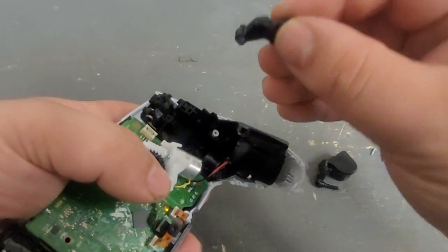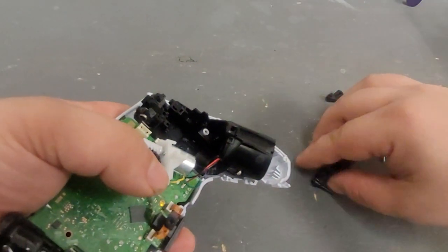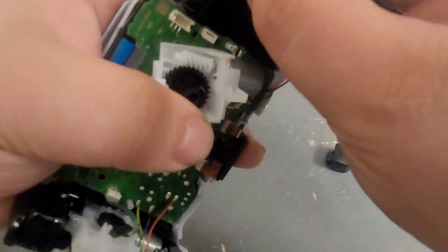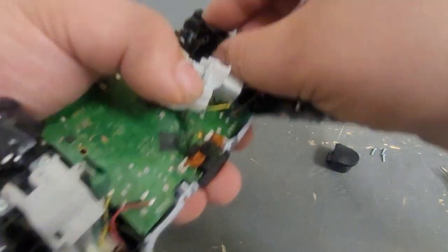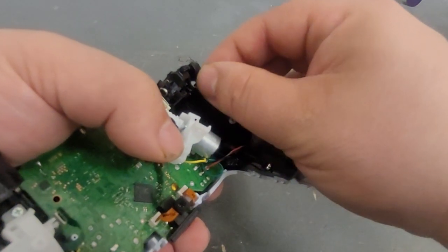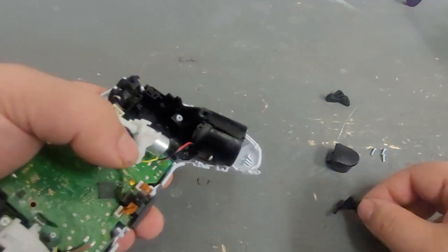Because that bar is not in there, that just kind of falls out. But normally to take that out, you just pull it up and then you can pull it out.